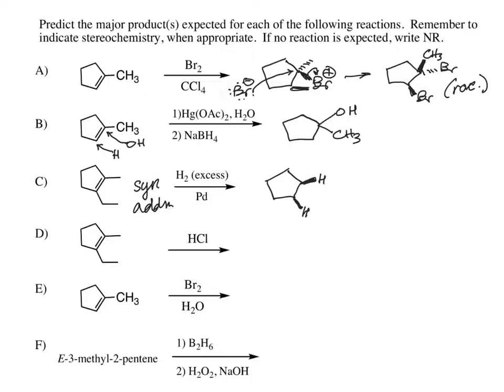If hydrogens come in as wedges, that means it's going to push the alkyl groups that are initially there back to be dashes. I have a methyl on the top carbon and an ethyl on the bottom carbon. Again, plus enantiomer or racemic, to indicate that the hydrogens can also come from the bottom face. This is a chiral molecule, so we would have to indicate that its enantiomer is also formed.